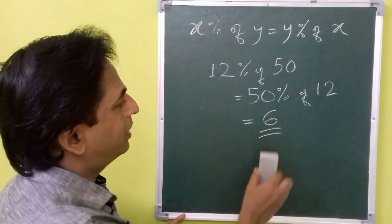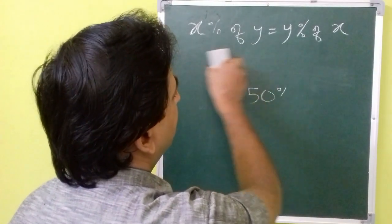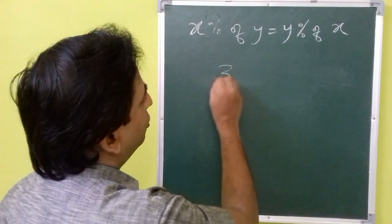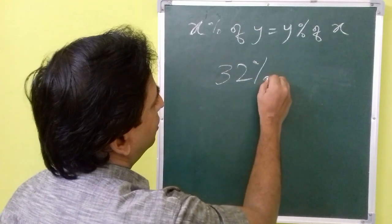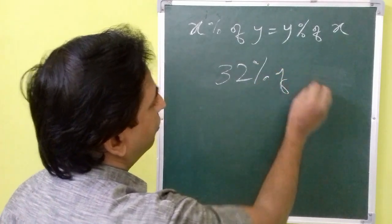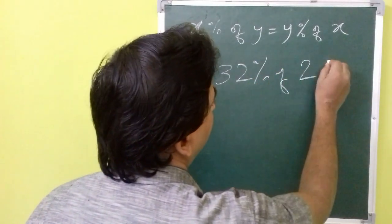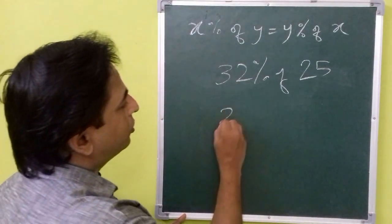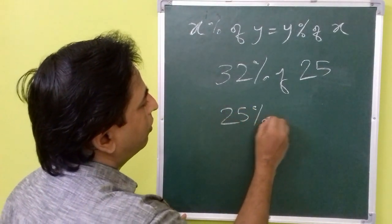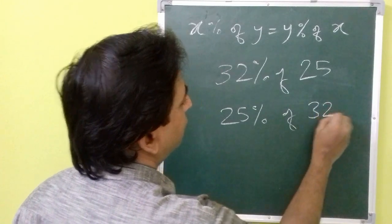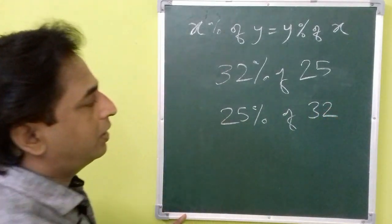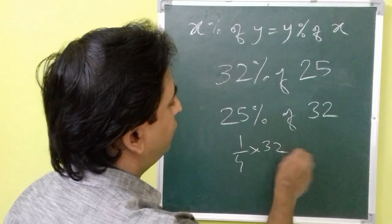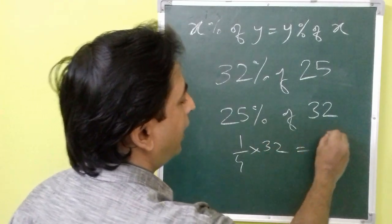Let us take one more example to illustrate it: 32% of 25 is also equal to 25% of 32. Since 25% is one fourth, one fourth of 32 is 8.